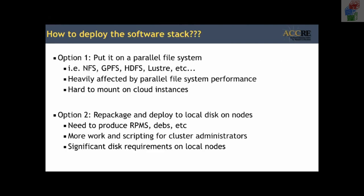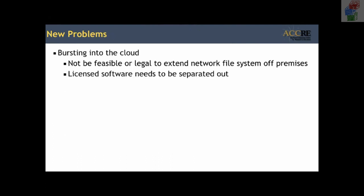We'd been happy with option one, but new problems over the last couple years caused us to rethink this model. First, trying to burst into the cloud — it's not feasible or legal for us to extend our network file system into cloud instances. We also have the problem that our software stack contains both licensed and open source software. We can't legally put the licensed software into the cloud, but we can and would like to put the open source software there.